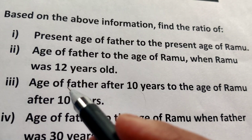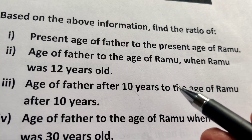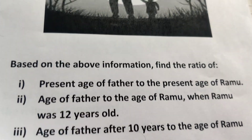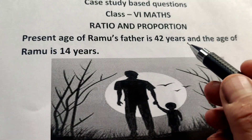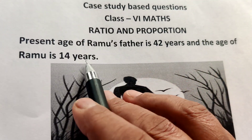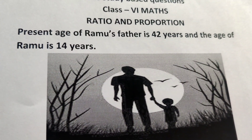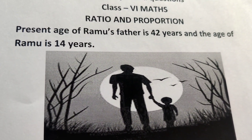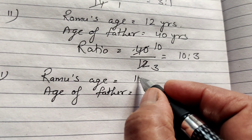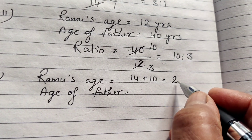Next, find the ratio of the age of father after 10 years to the age of Ramu after 10 years. After 10 years, the age of father is 42 plus 10 which is 52, and the age of Ramu is 14 plus 10 which is 24 years.